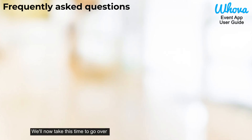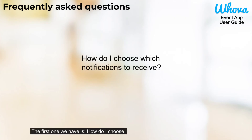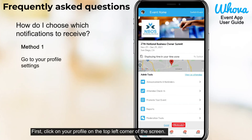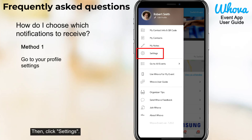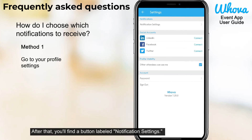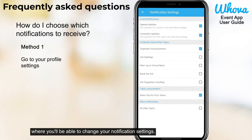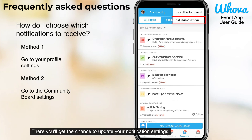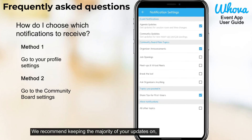We'll now take this time to go over some frequently asked questions. The first one is: how do I choose which notifications to receive? Throughout the event, you'll get various event notifications such as community and agenda updates. First, click on your profile on the top left corner of the screen. Then click settings. After that, you'll find a button labeled notification settings. Clicking that will lead you to the page where you'll be able to change your notification settings. Or you can go to the community board and click the three dots at the top right hand corner of the screen to update your notification settings. We recommend keeping the majority of your updates on, but you can always go in and update according to your preferences.